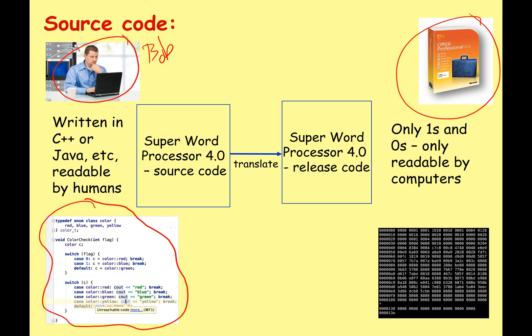This is made up of ones and zeros — it's binary — and now it's only readable by computers. If you were to try and open this and have a look at the code rather than just running the software, you'd get binary. When we represent binary on screen for people, we usually represent it using hexadecimal. That's why you can see some different numbers and letters here, not just ones and zeros — this is just how we represent the binary file.